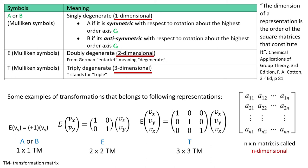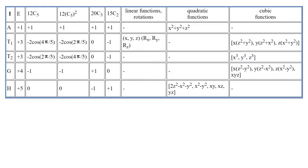When a square matrix is n by n it's called n-dimensional. So A and B representations are called one-dimensional, E and T, two and three-dimensional, respectively. So could you tell me please what is the dimensionality of G and H representations?